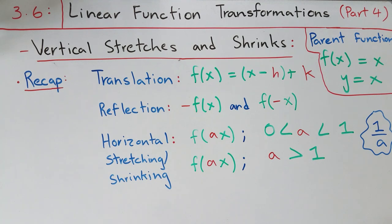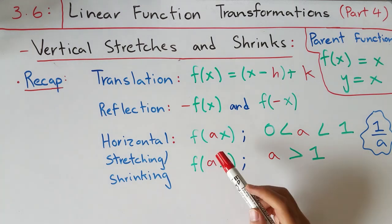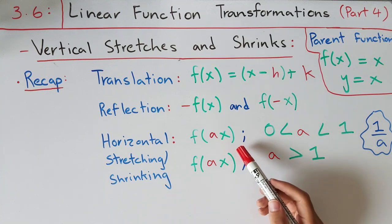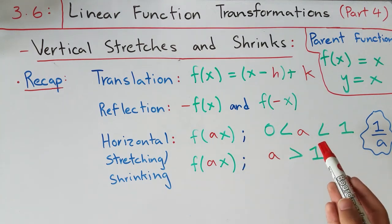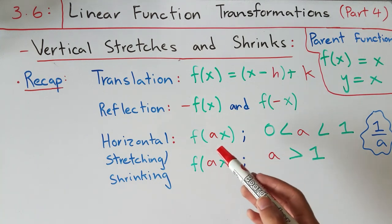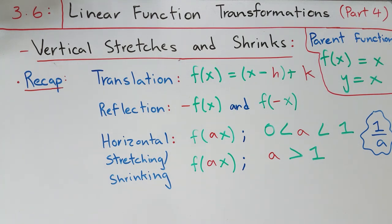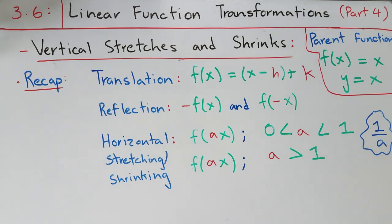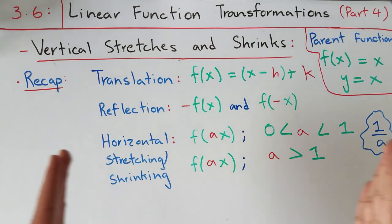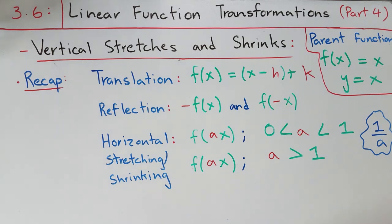The third type of transformation is horizontal stretching and shrinking. In horizontal stretching you have f(ax) where a is greater than zero but less than one, meaning a is a fraction, which stretches the function horizontally. In horizontal shrinking, a is greater than one, which compresses the function so the slope gets steeper. For both, the stretch factor is given by the reciprocal of your a value.